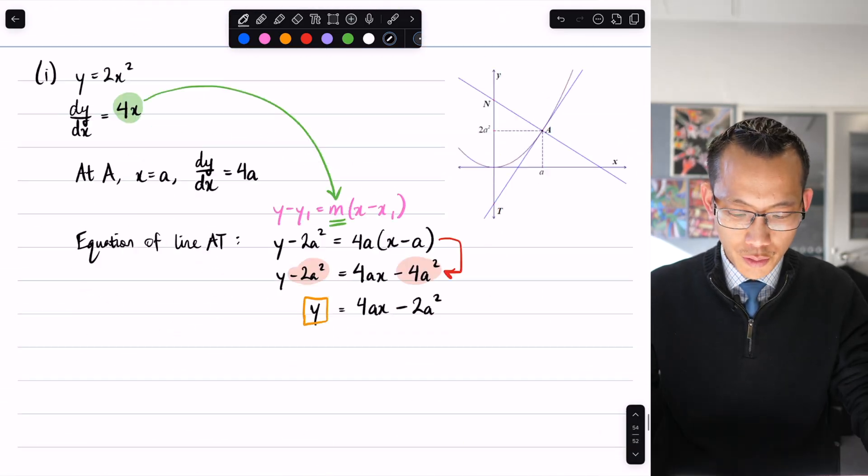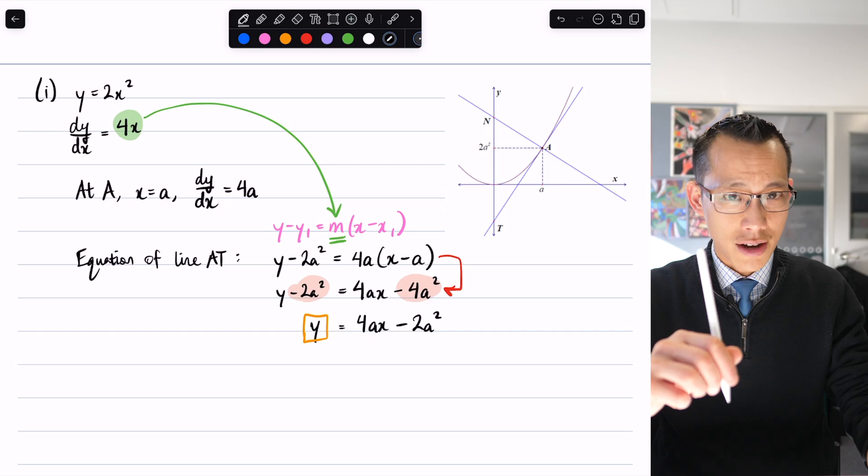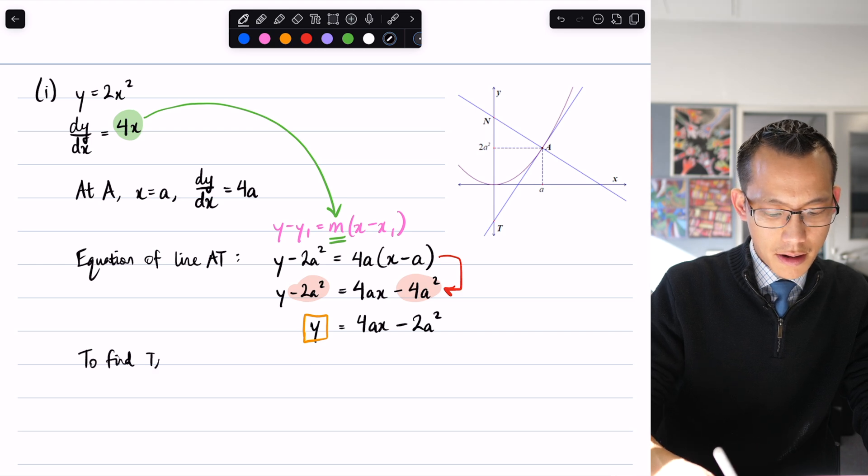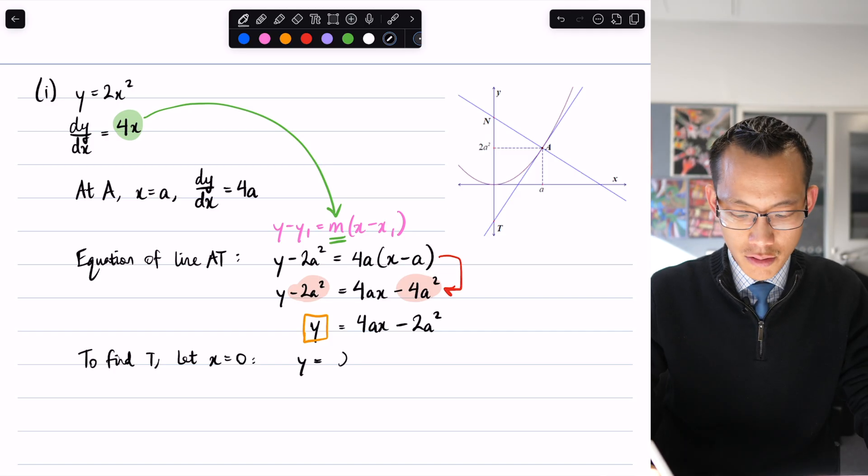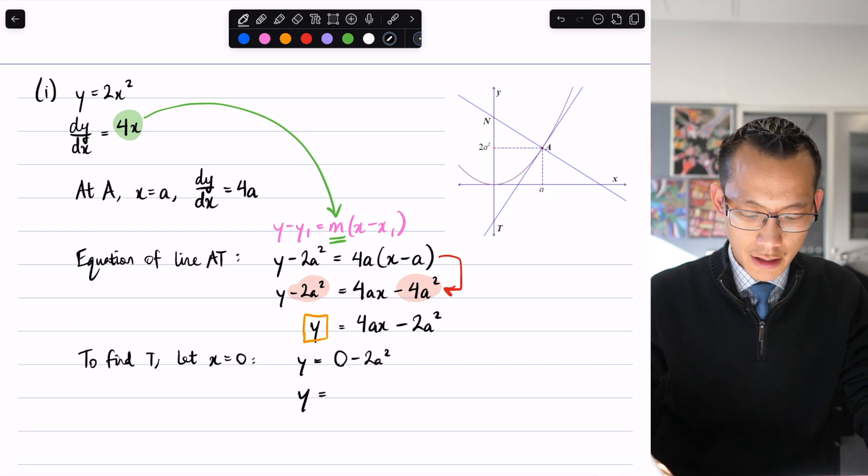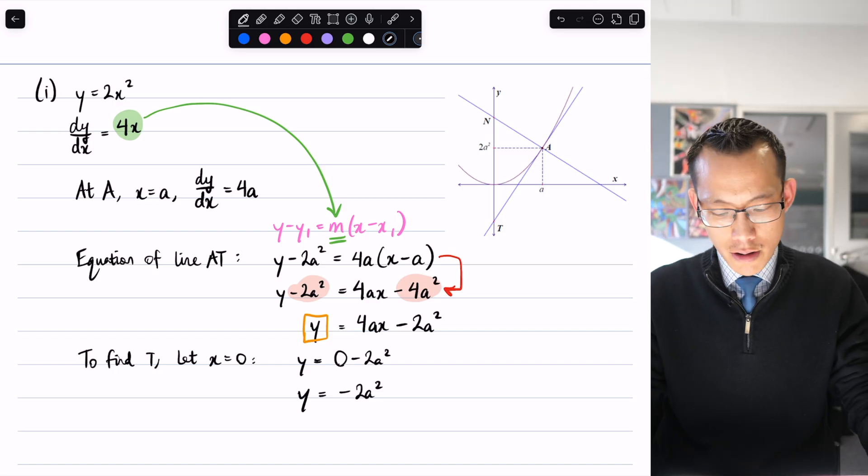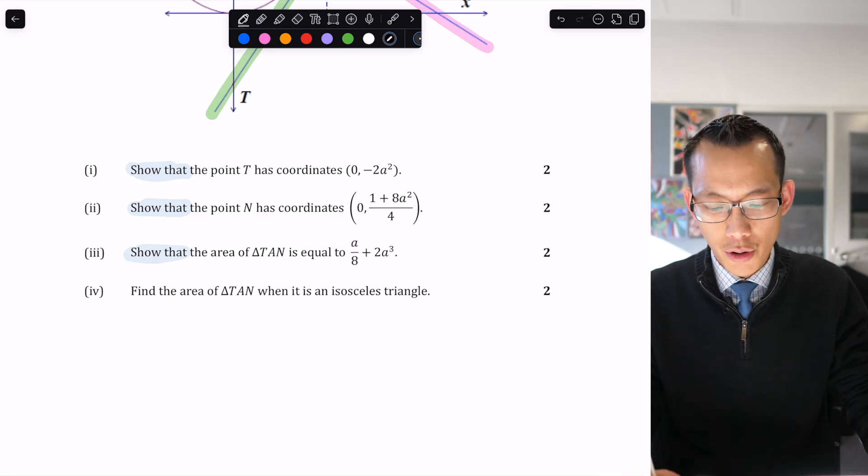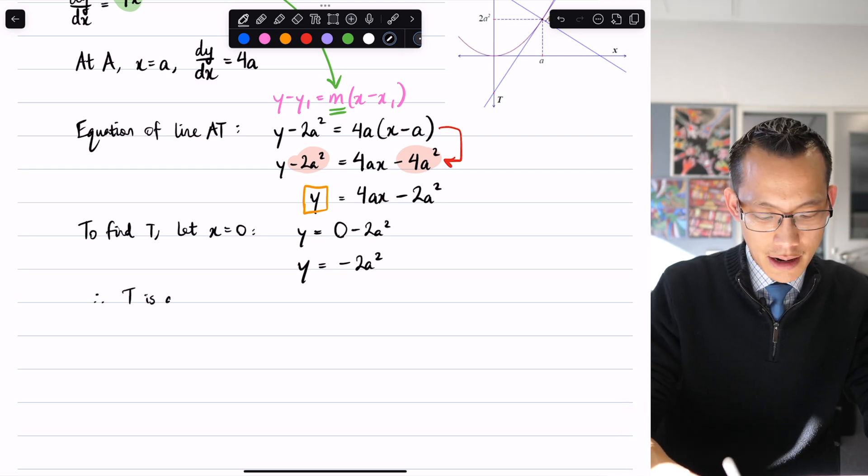I've got my equation of line AT, the green tangent line. To find the coordinates of T, let x = 0. Then y = 4a(0) - 2a² = -2a². Let's check the question: show that point T has coordinates (0, -2a²). That's a relief, we've got the right answer. So T is at (0, -2a²).